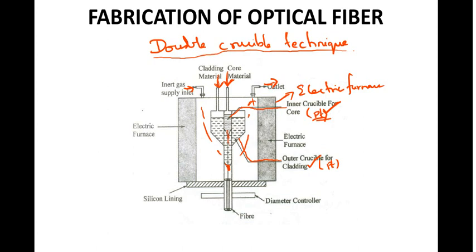Because of the high temperature from the electric furnace, the core material and cladding material become molten. The core material is in the inner crucible, immediately surrounded by the cladding material. The diameter of the optical fiber is controlled by a diameter controller. This is how you get the optical fiber using the double crucible technique.